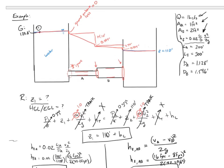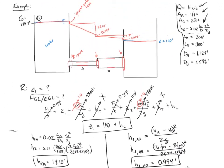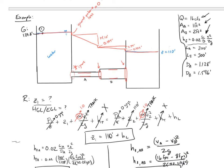Now for the HGL: we subtract v² / 2g from the EGL at each location. In both reservoirs there is no velocity, so the HGL and EGL coincide there. In the wide pipe B, v² / 2g is very small, so the HGL is close to the EGL. In narrow pipe A, v² / 2g is very large, so the HGL is well below the EGL.